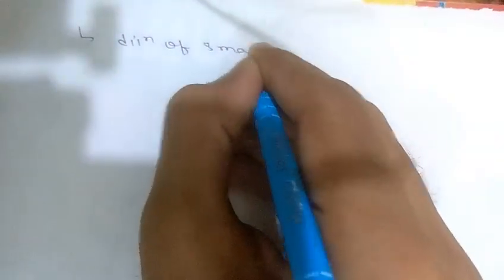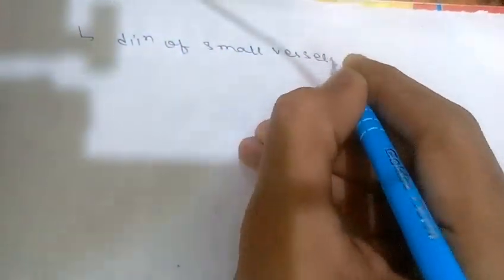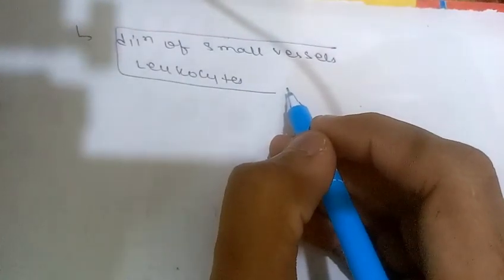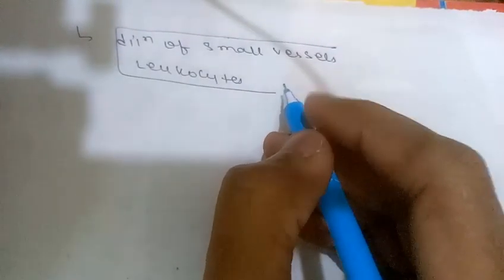Let's discuss the morphological patterns of acute inflammation. The main morphological hallmarks of acute inflammatory reactions are dilation of small vessels, accumulation of leukocytes and other types of cells. This is the basic hallmark of acute inflammation. Now we will discuss in detail about the types of inflammation.